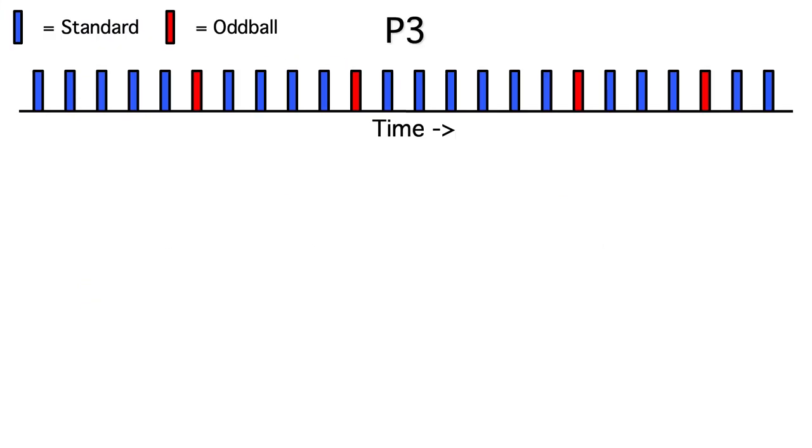We could take the auditory oddball paradigm we previously discussed for the mismatch negativity, slow it down a little, and have subjects press a button for each stimulus to indicate whether it's the lower pitch or the higher pitch. It would sound like this.